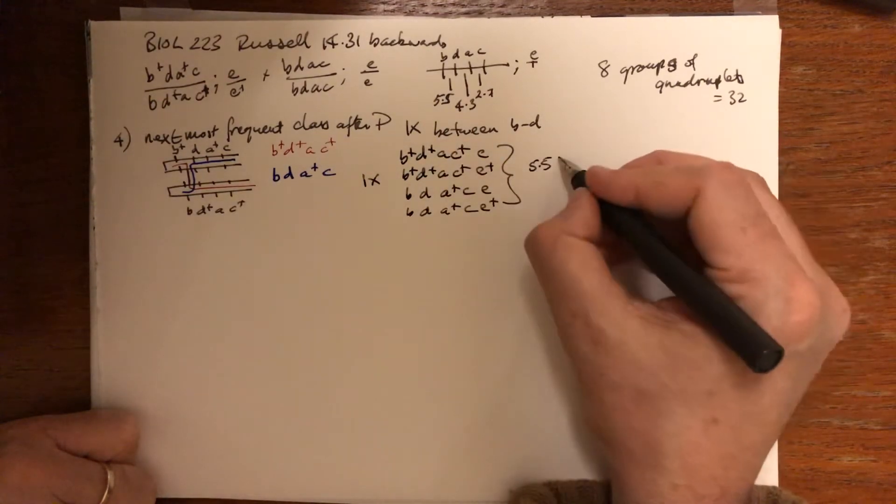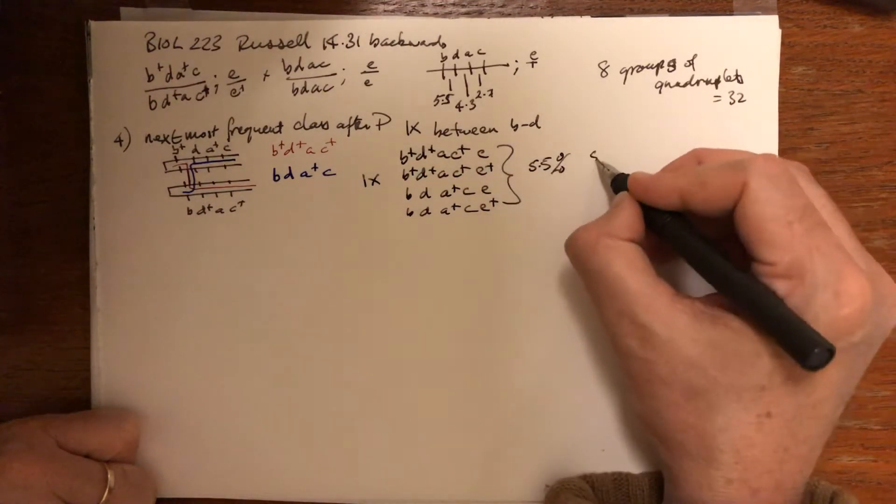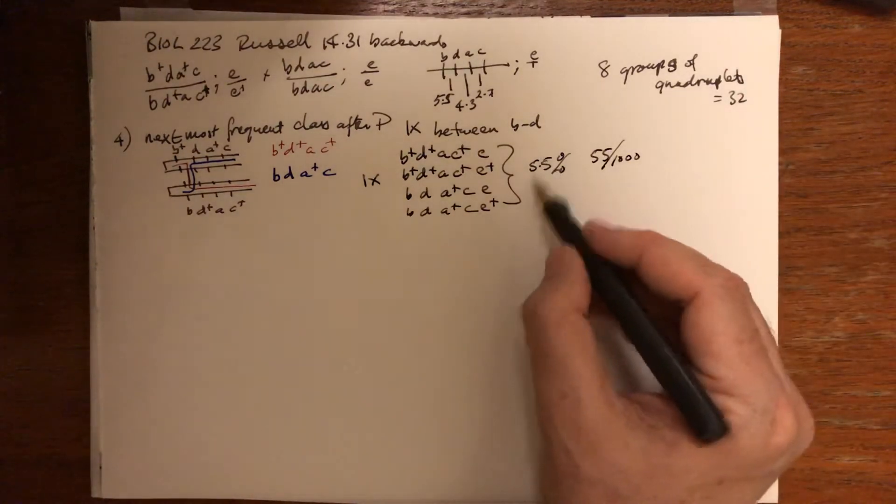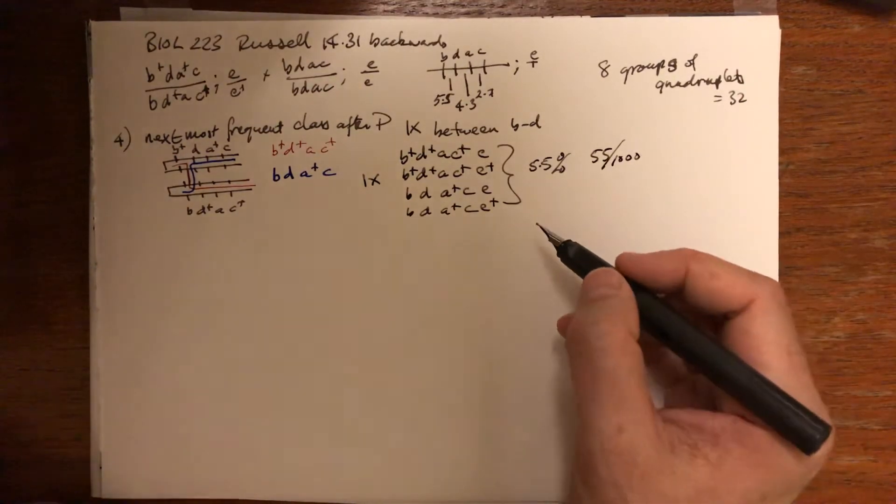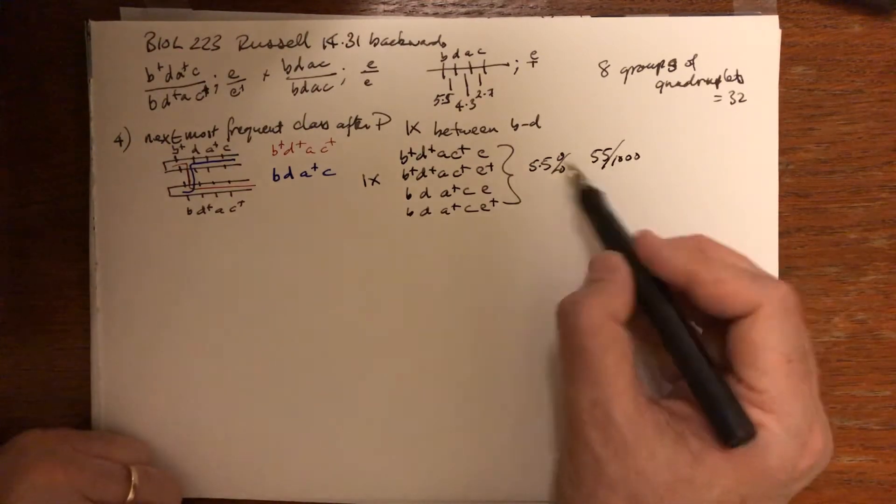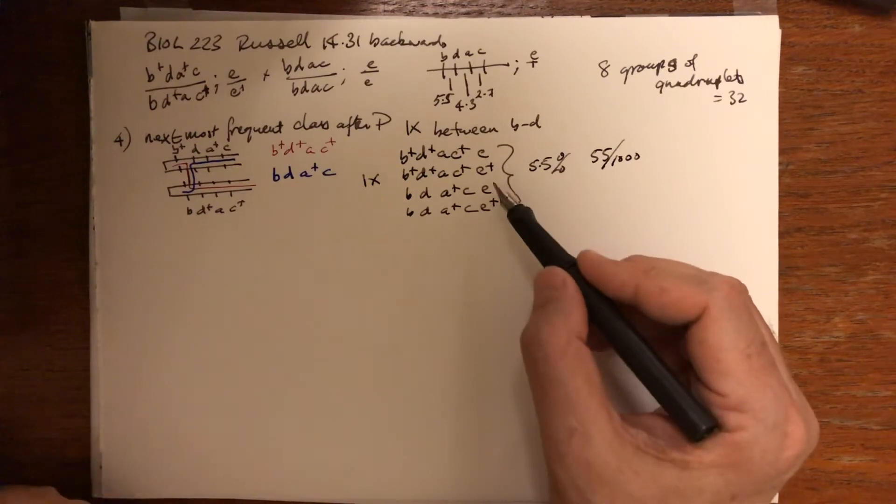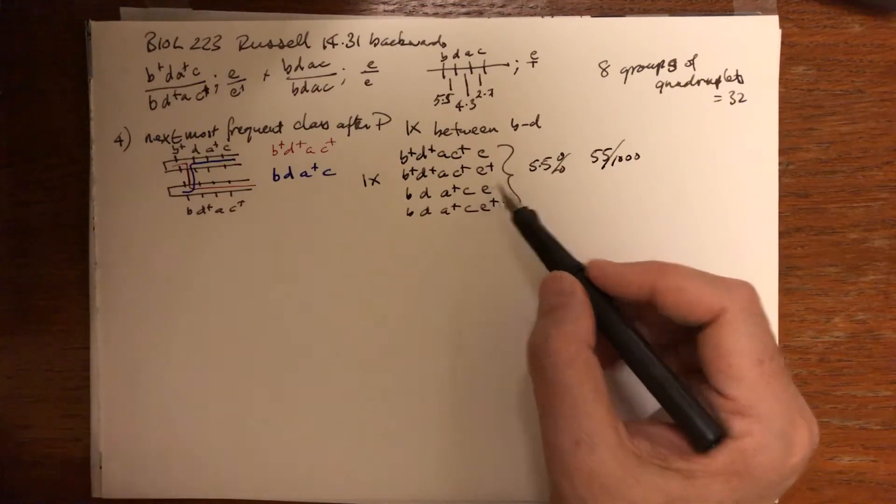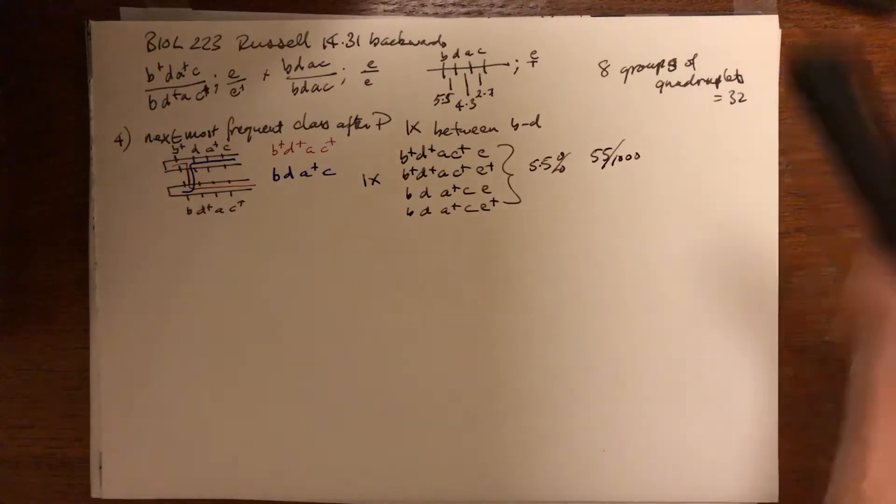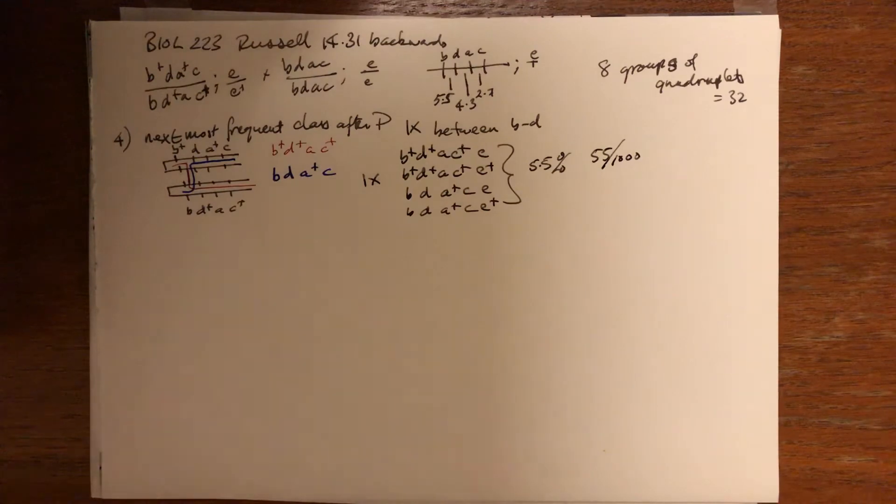These being the most frequent single crossing over—5.5 map units—we expect to see 5.5 percent of the total as a sum. Out of a thousand, that would be 55 out of a thousand, so about 10 or so. You know from the dice lab that if the expectation is 11, we don't see 11, 11, 11, 12—we see something that can vary quite a bit.